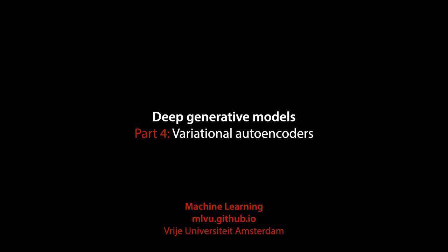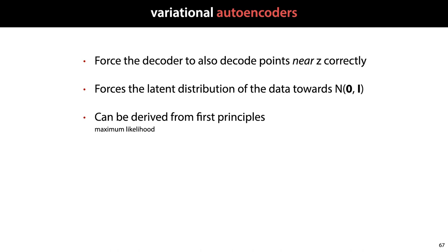In the previous video, we introduced the idea of autoencoders. In this video, we will extend that idea to variational autoencoders. These have a few advantages: they explicitly force the decoder to also decode points that are near the latent representations of our data, they force the latent distribution to a specific shape — specifically that of the standard normal distribution — and they can be derived from first principles.